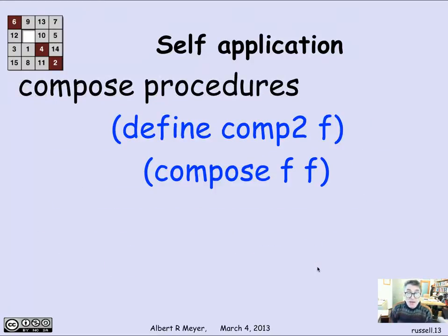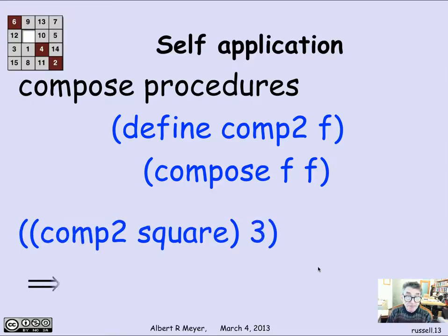OK, well, now let's define a compose it with itself operation. I'm going to call it comp2. Comp2 takes one function f, and the definition of comp2 is compose f with f. And if I then apply comp2 to square and 3, it's saying, OK, compose square and square. We just did that. That was the fourth power. Apply it to 3, I get 81.